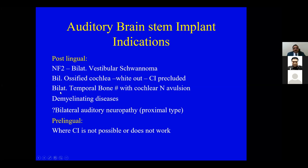The next indication is bilateral temporal bone fracture with cochlear involvement — a very, very rare situation. In fact, in all my years I have seen only two patients with bilateral temporal bone involvement, and unfortunately both did not proceed with surgery. Most surgeons may never have seen this. The other condition, which I put a question mark on, is bilateral auditory neuropathy, which may be peripheral or central.